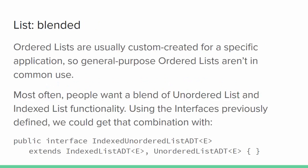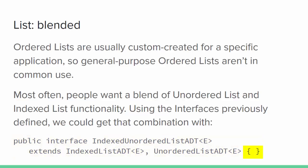General-purpose ordered lists aren't common — if you need one you'll probably create a custom implementation that knows how your application wants elements ordered. The other two kinds of lists apply to many applications, and because their methods are compatible you usually find lists that combine the methods of unordered and indexed lists. If we already had all these interfaces defined separately, we could combine them by creating a new interface that extends them both. This new interface doesn't need additional methods — it inherits all the methods from the indexed list and from the unordered list and combines them.